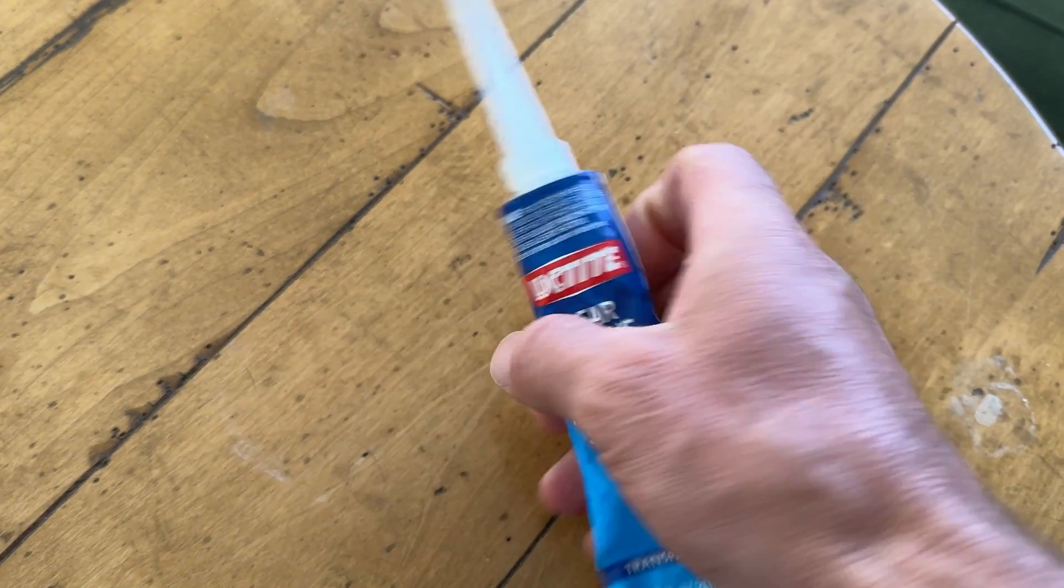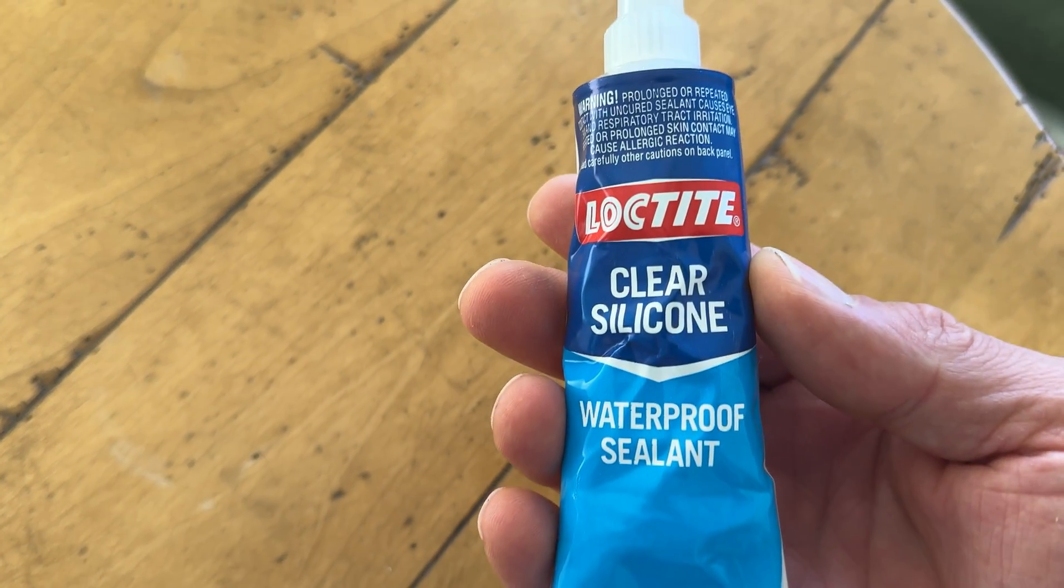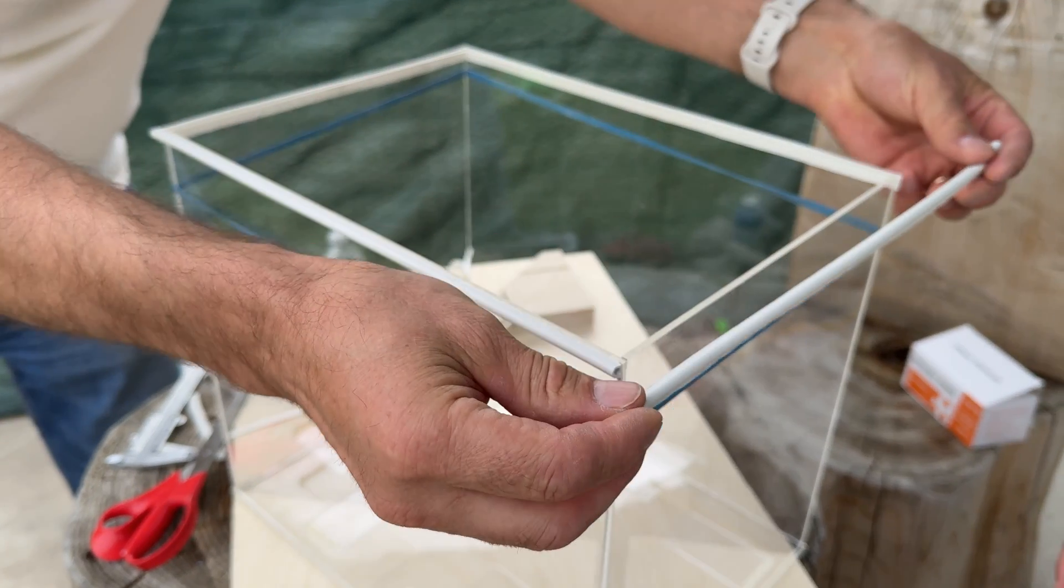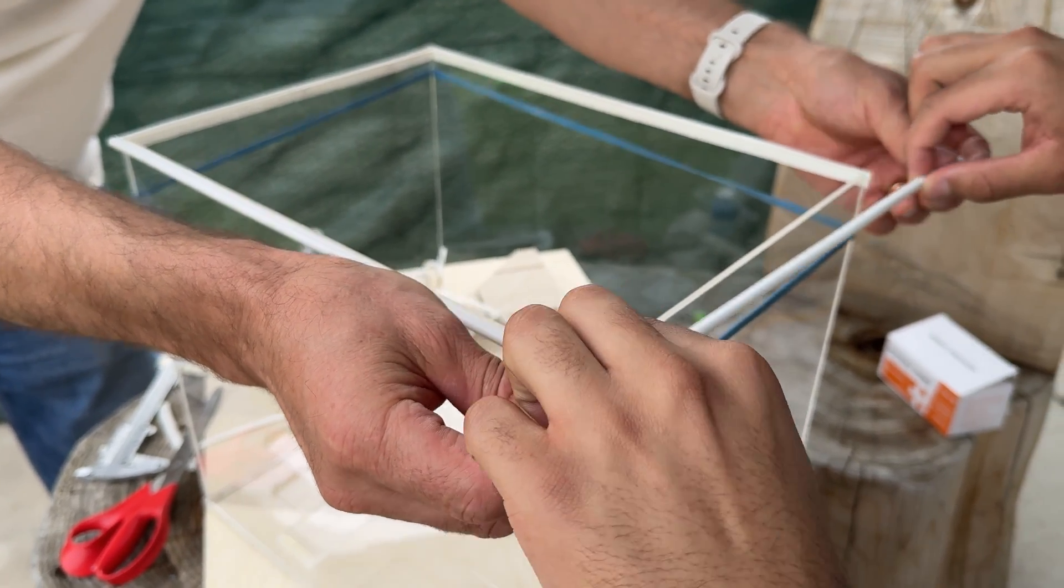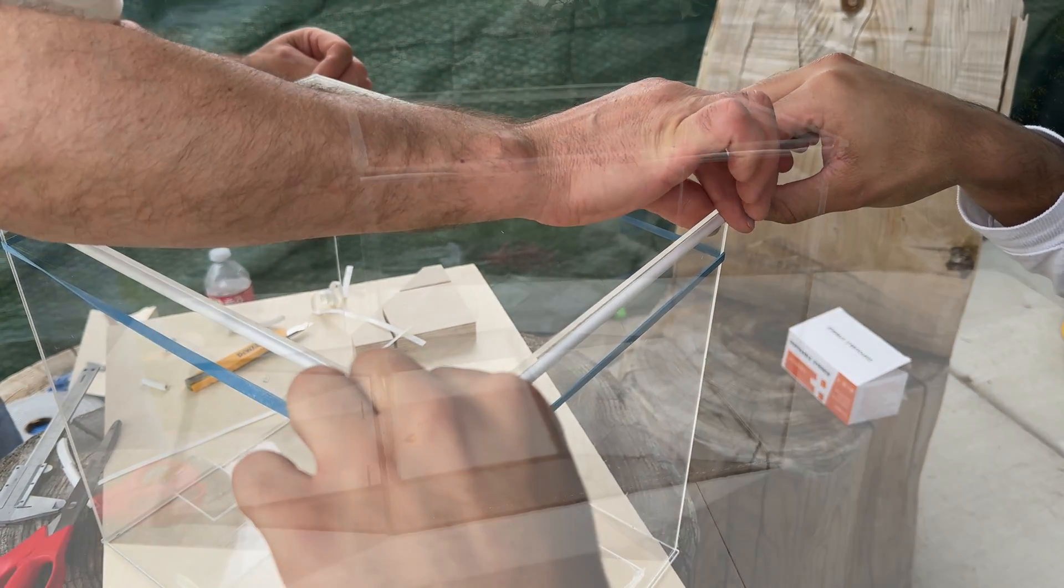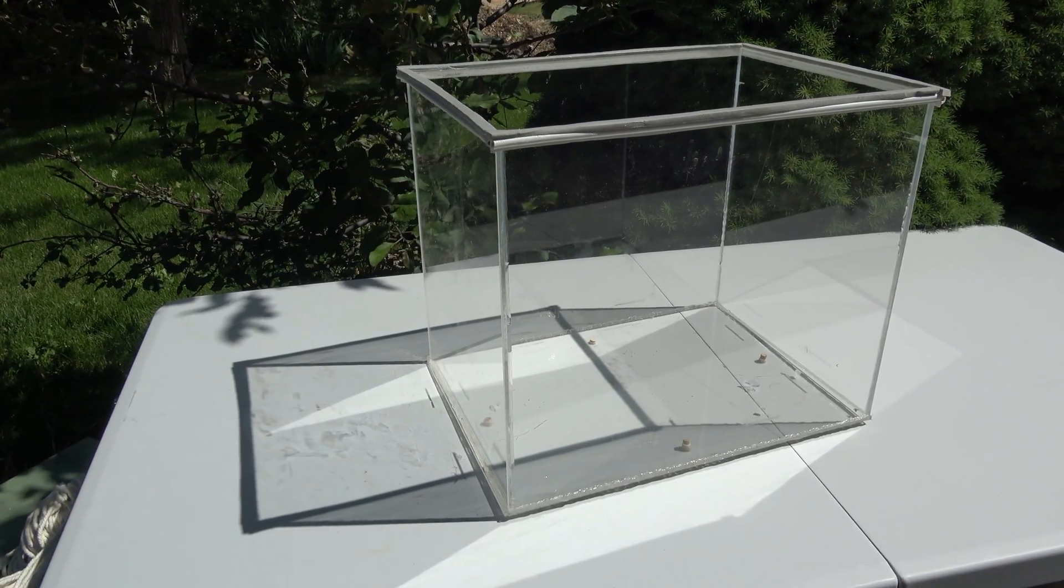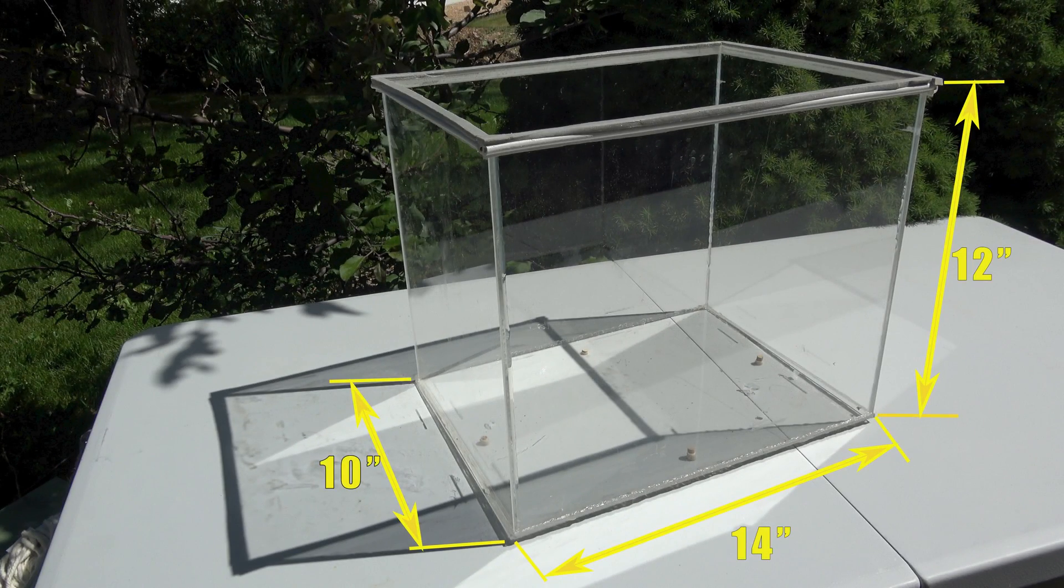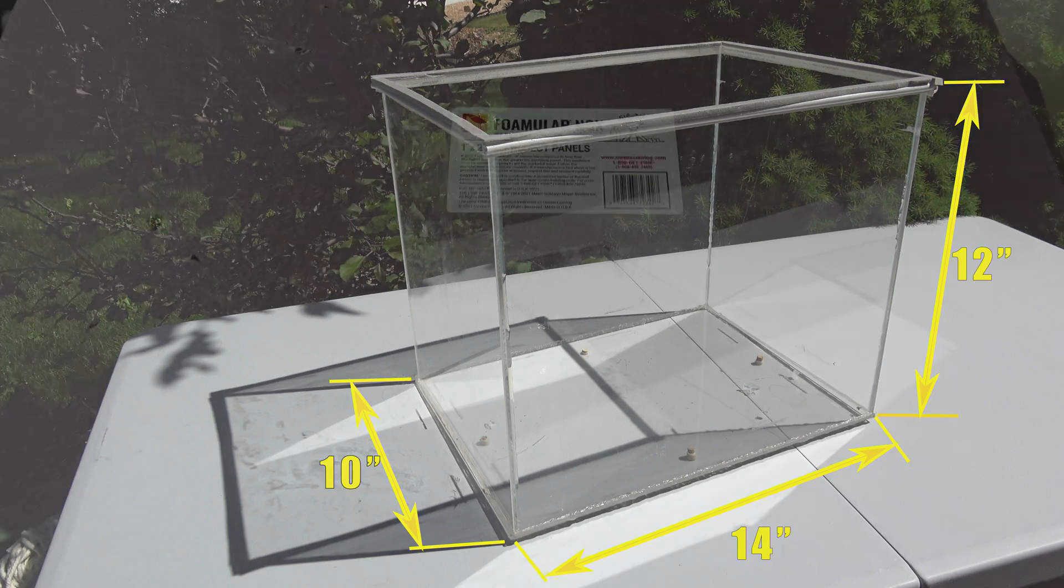After the glue dried, silicone glue was added to the corners for extra sealing. Then, around the edges, double layers of door weather stripping were added to make sure no vapor could escape. This finished tank was 10 inches wide, 14 inches long, and 12 inches tall. A perfect size for a home cloud chamber.